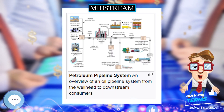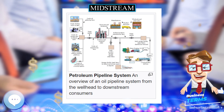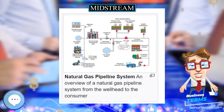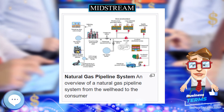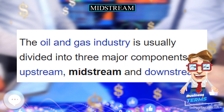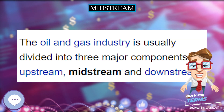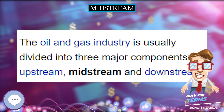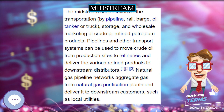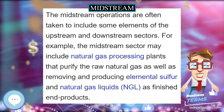The midstream operations are often taken to include some elements of the upstream and downstream sectors. For example, the midstream sector may include natural gas processing plants that purify the raw natural gas, as well as removing and producing elemental sulfur and natural gas liquids as finished end products.